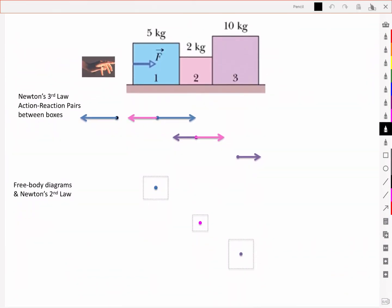Let's look first at the action-reaction pairs between the boxes. First off, we have that force that's applied here. The total force, and it's applied to box number one. There's an equal and opposite force then that it applies to the hand, or whatever's applying the force to the box. And I'll say that I'm putting this as my positive x-axis in this direction.